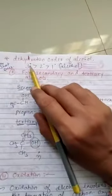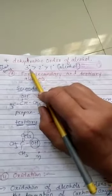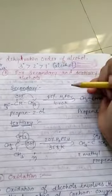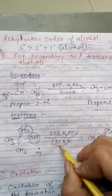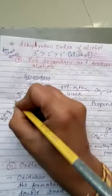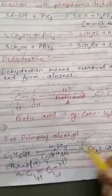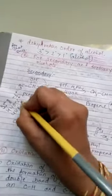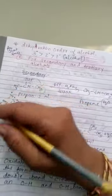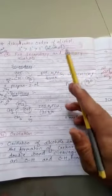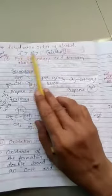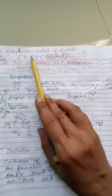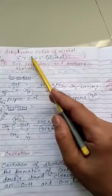Now I forgot to write this in your notes, so please write it down — for a short question: what is the order of dehydration in alcohols? Tertiary dehydrates first at 358K, secondary at 440K, and primary at 443K. So at the lowest temperature, tertiary removes water first, then secondary, then primary. The order of dehydration is: tertiary > secondary > primary.